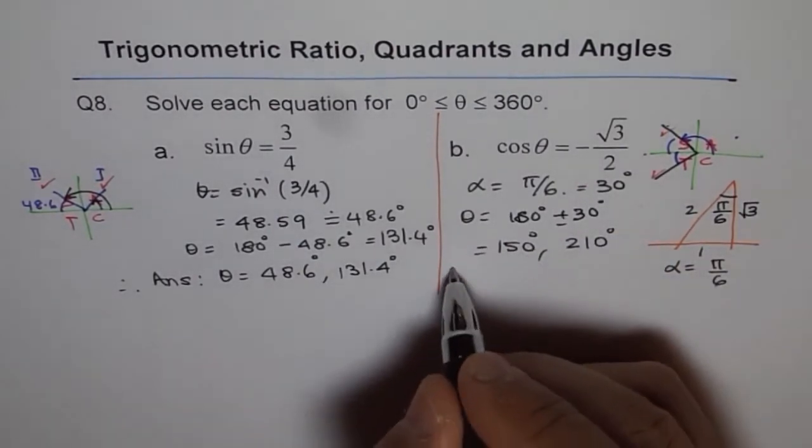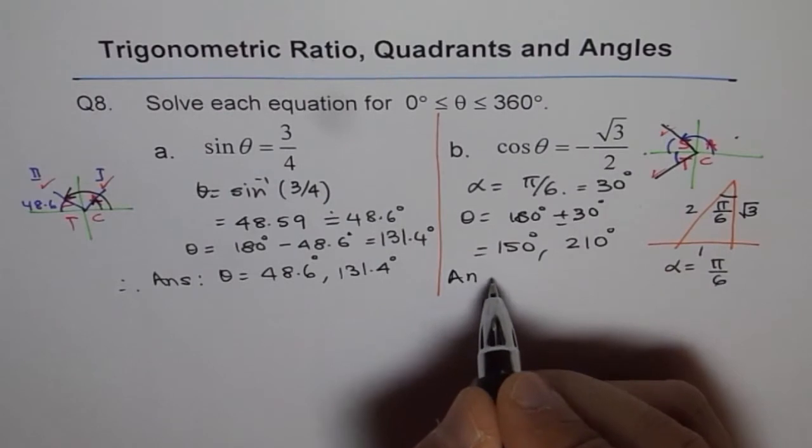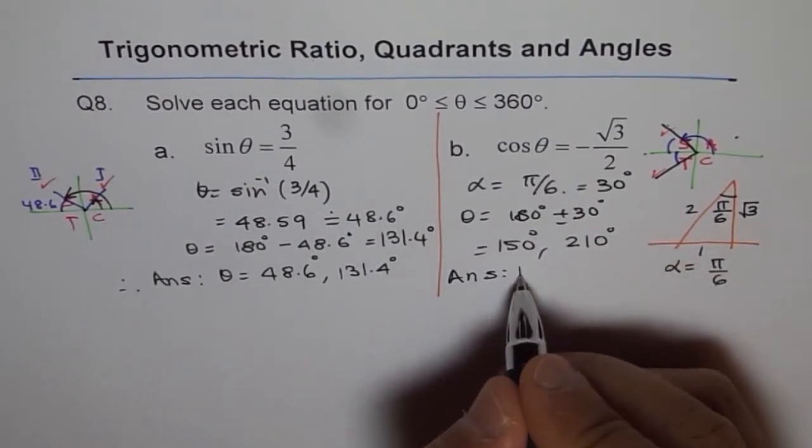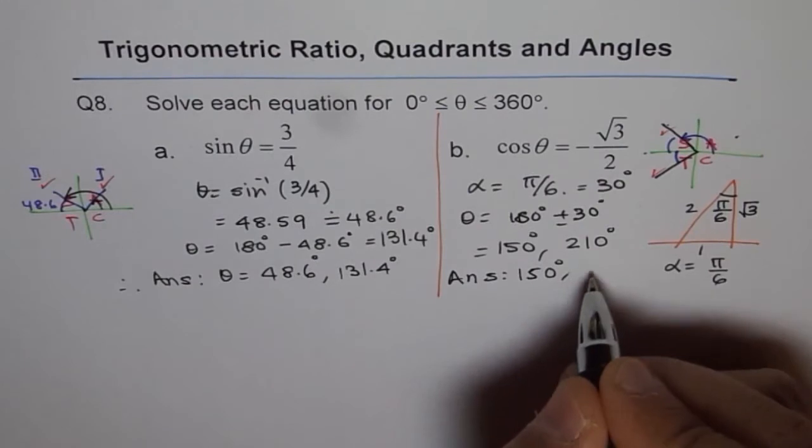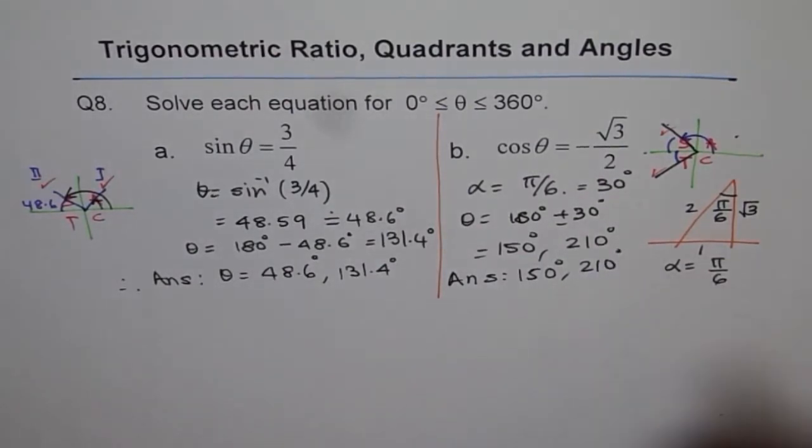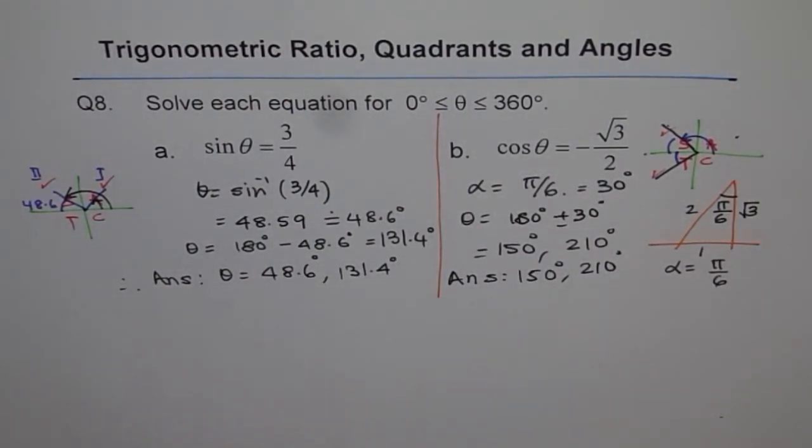So these are two answers for cos θ = -√3/2. 150 degrees and 210 degrees. That is how we are going to solve it. Thank you.